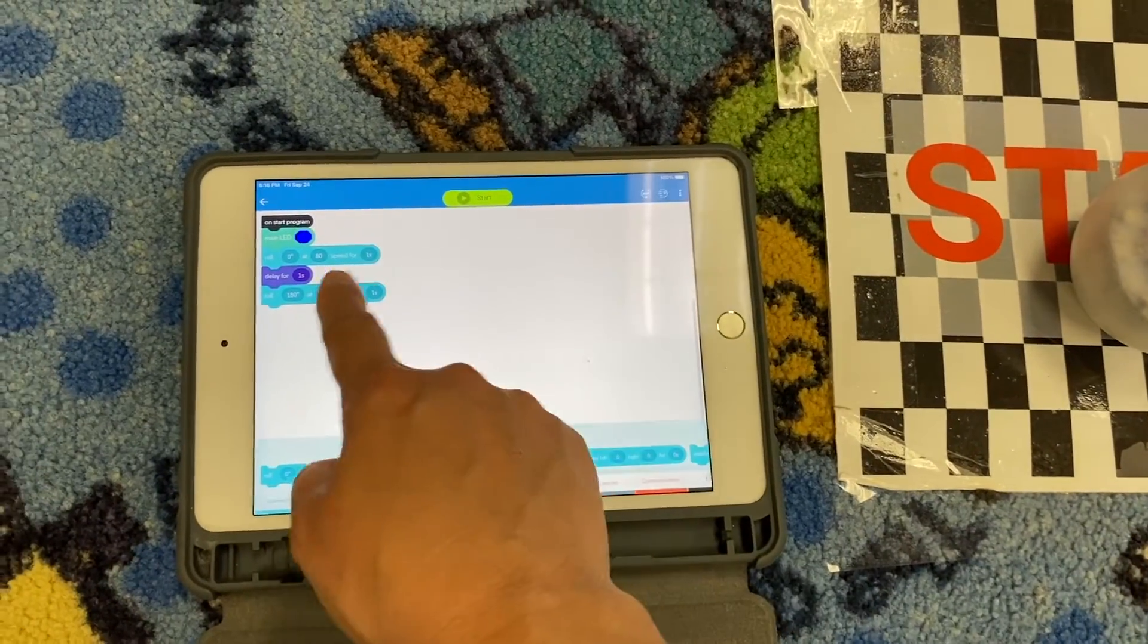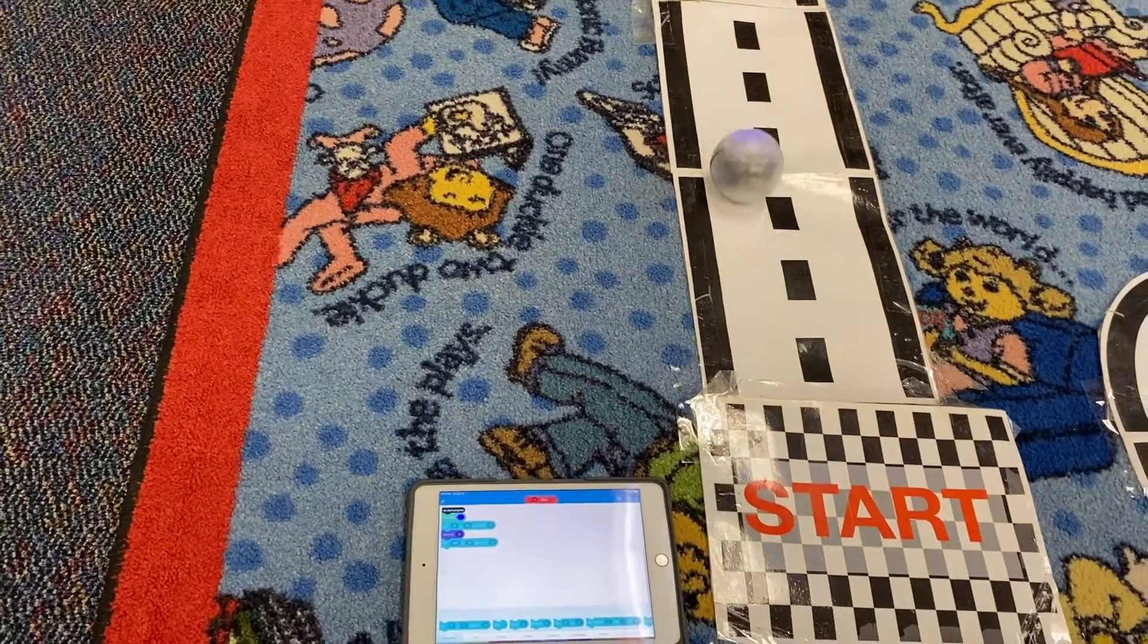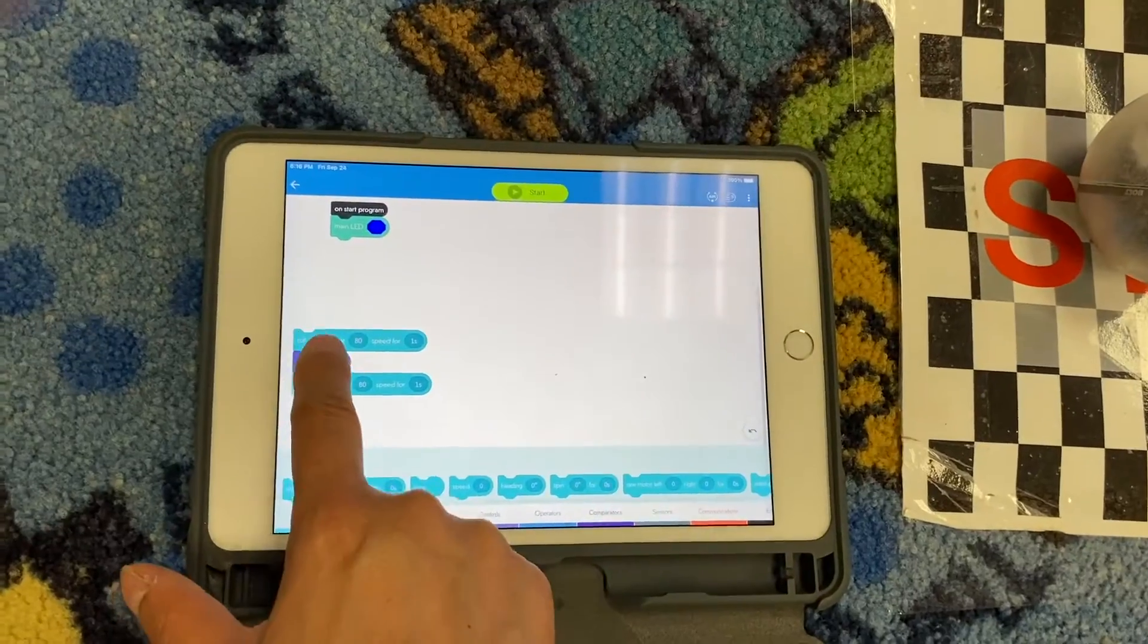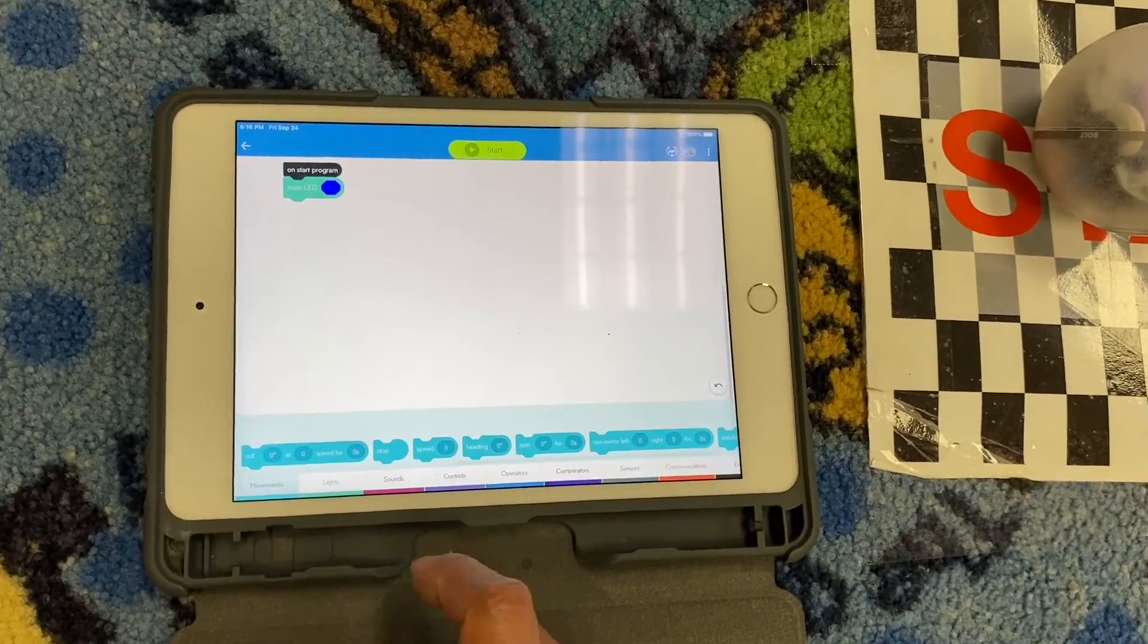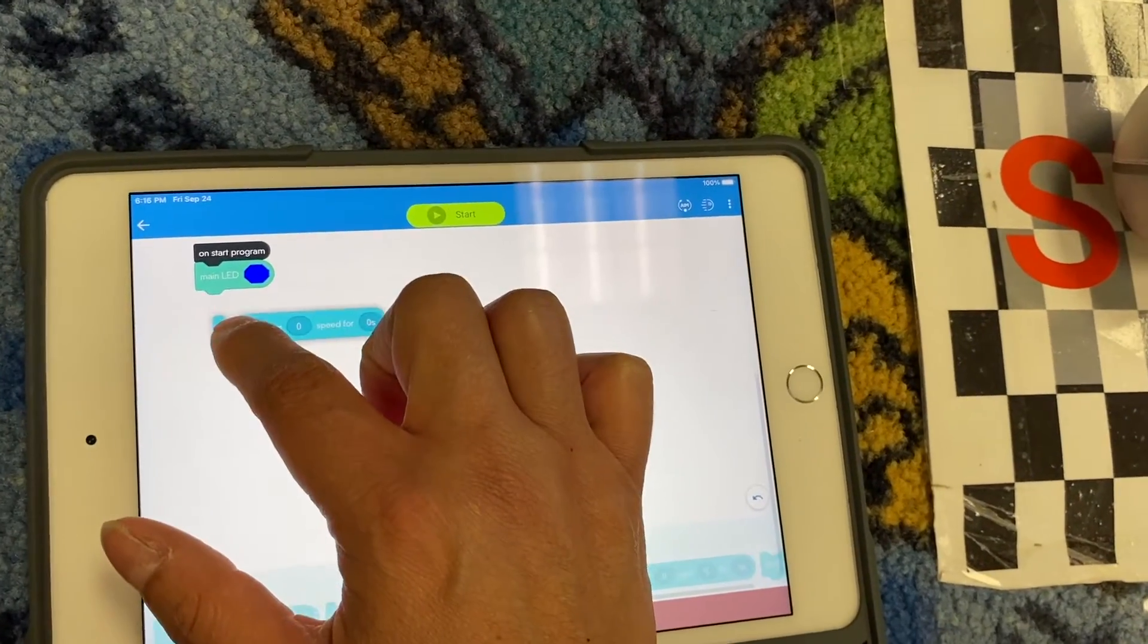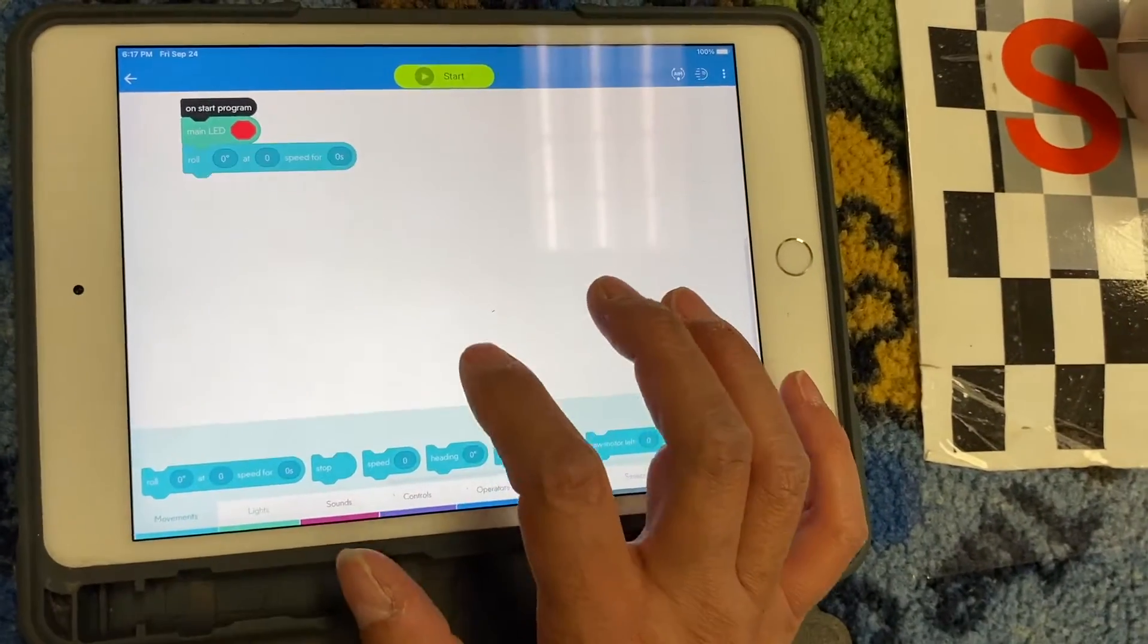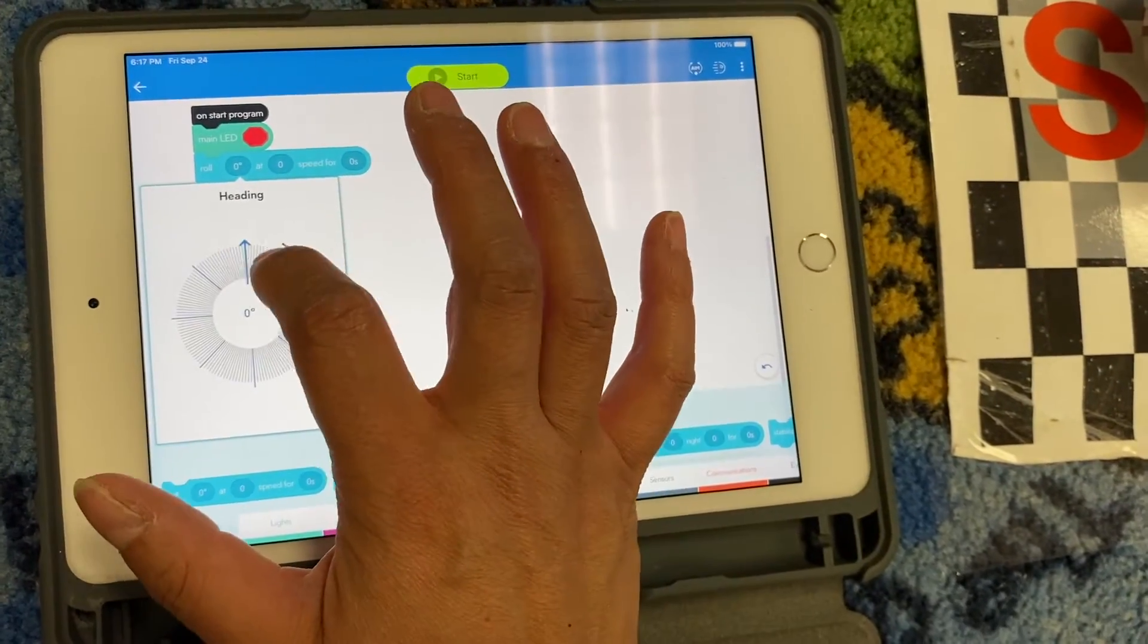It shows you here, look, one sample, you can just press Start there, it's going to code it. Okay, so I'm going to go ahead and delete this program and then you can try your own. Okay, so here you're going to drag it and this you could change it to whatever color you want, and then you can have it roll straight.